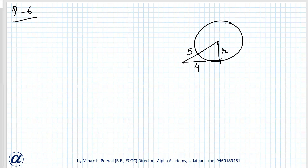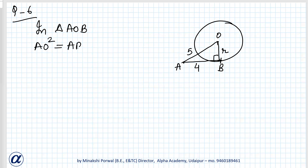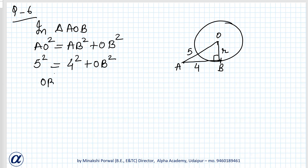The angle at the point of tangency is 90 degrees. We apply the Pythagorean theorem. In triangle AOB, AO² equals AB² plus OB². AO is 5, AB is 4, so: 5² = 4² + OB², which gives OB² = 5² minus 4².